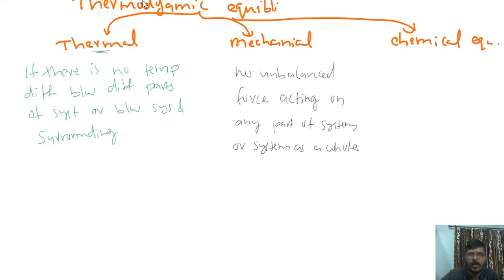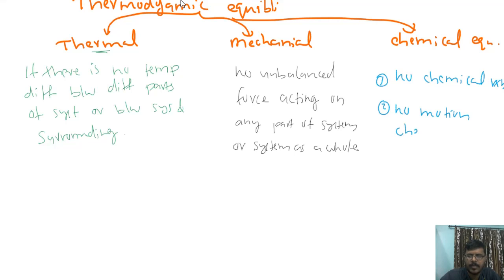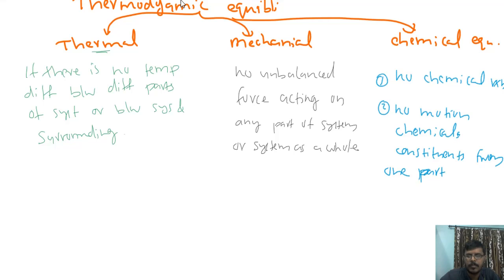For chemical equilibrium, a system is said to be in chemical equilibrium if there is no chemical reaction taking place, and there is no motion of chemical constituents from one part of the system to another part of the system.